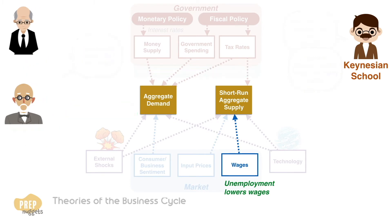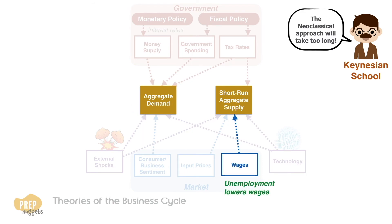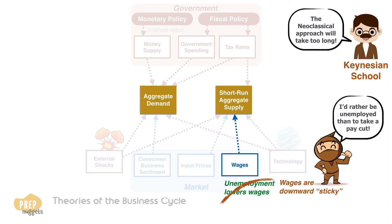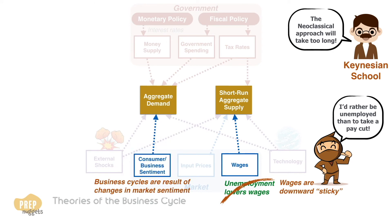The Keynesian economists, while agreeing that neoclassical theory has its merit, argue that it can take a very long time for the market to adjust wages and go back to full employment. This is because wages are inherently downward-sticky — many will choose to remain unemployed rather than to accept a pay cut. The Keynesians also believe that the business cycle is the result of swings in market sentiment, rather than changes in technology or government intervention.